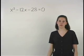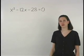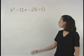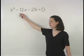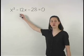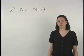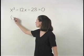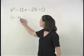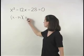To factor x squared minus 12x minus 28, we need the factors of negative 28 that add to negative 12, which are negative 14 and positive 2. So we have x minus 14 times x plus 2.